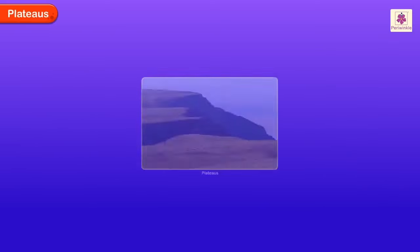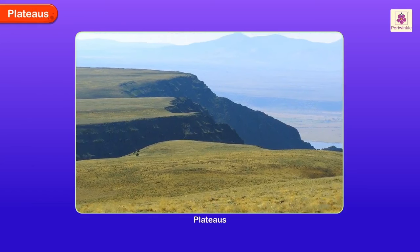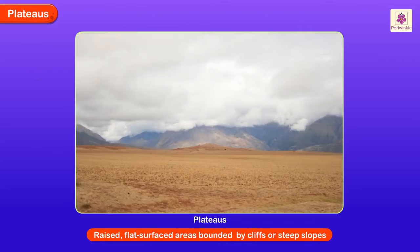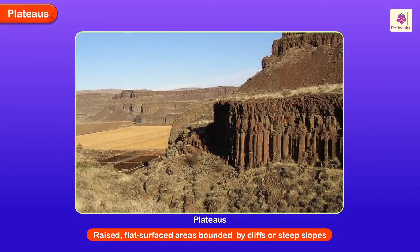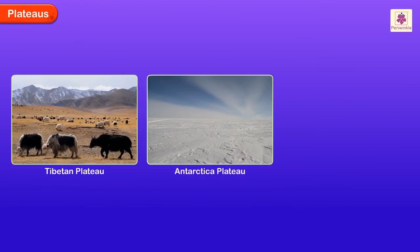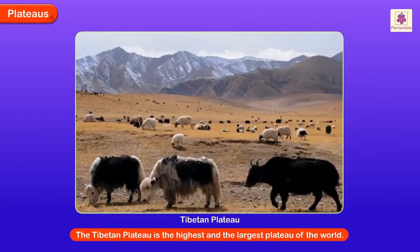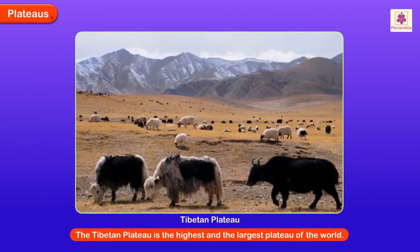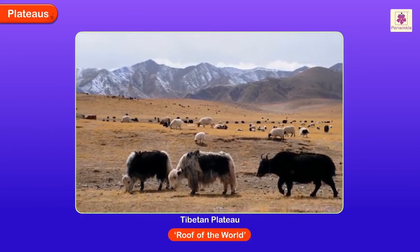Plateaus are fairly leveled highland areas among steep slopes of surrounding hills. These are raised, flat surface areas bounded on one or more sides by cliffs or steep slopes. Some plateaus are the Tibetan Plateau, the Antarctica Plateau and the Deccan Plateau of India. The Tibetan Plateau is the highest and the largest plateau of the world. It is also called the roof of the world.